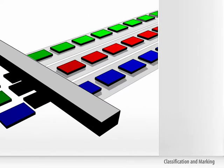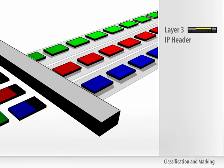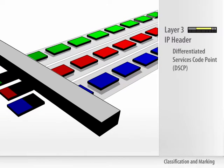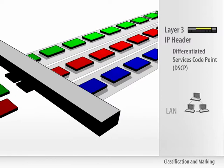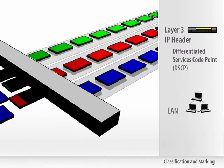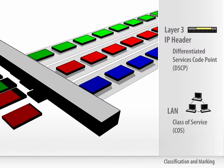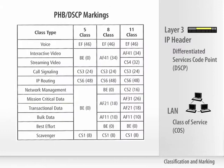Marking is typically done at the layer 3 IP header using the Differentiated Services Code Point, or DSCP. LAN implementations use the Class of Service, or COS, field. This table illustrates best practices surrounding DSCP marking values.